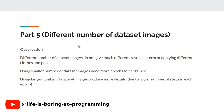Observation: Using a smaller number of training dataset images does not affect the ability to apply different clothes and different poses to the results. If we use a smaller number of training dataset images, we need more epochs to train. If we have a larger number of training dataset images, we can have more details in the result images.